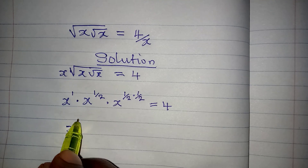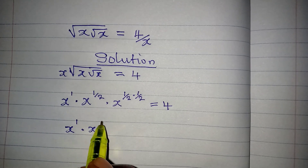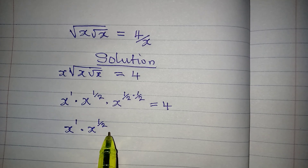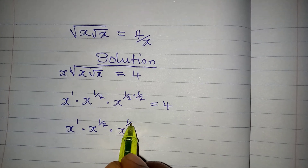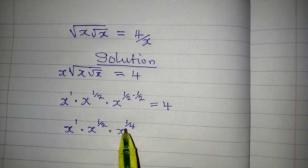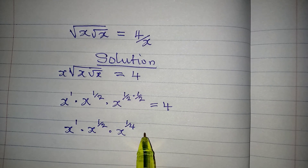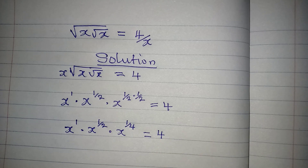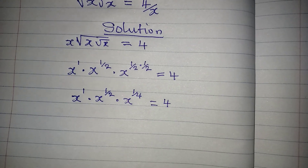The third x is under two square root signs, so we're going to have 1 over 2 in two places, giving x to the power of 1 over 4. So we have x to the power of 1, multiplied by x to the power of 1 over 2, multiplied by x to the power of 1 over 4, all equal to 4.